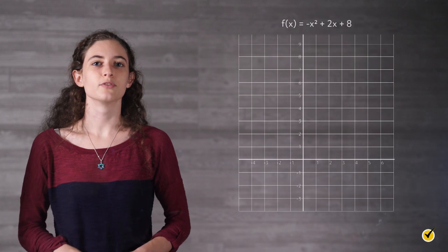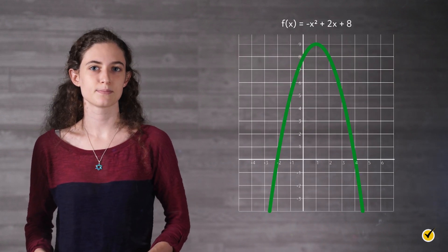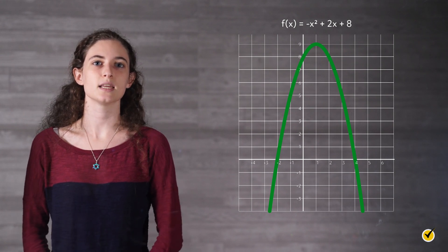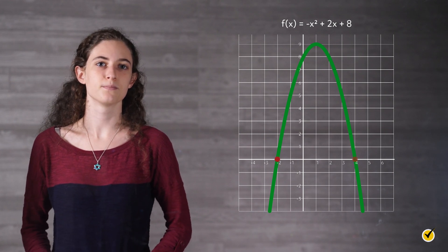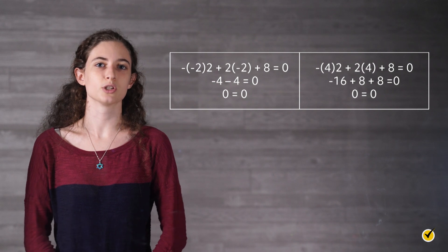Here is the graph of f of x equals negative x squared plus 2x plus 8. The solutions to the equation negative x squared plus 2x plus 8 equals 0 are x equals negative 2 and x equals 4. Solutions can always be verified by plugging them back into the original equation.